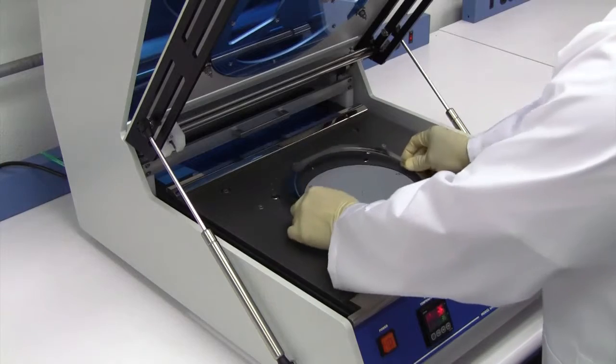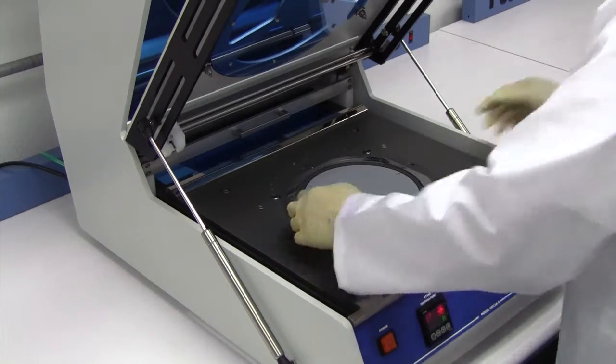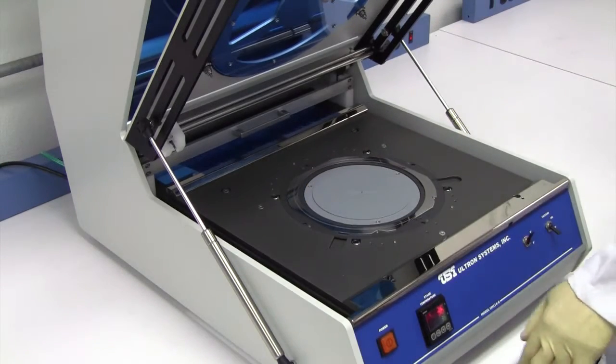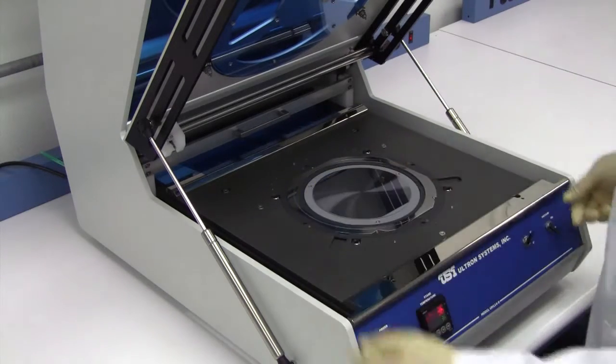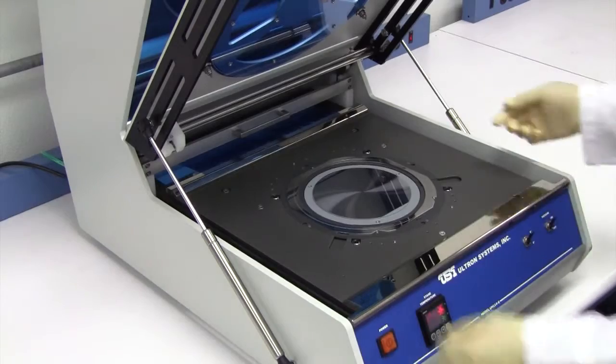First, load the film frame and wafer onto the machine, then turn on the vacuum switch to hold them into position.